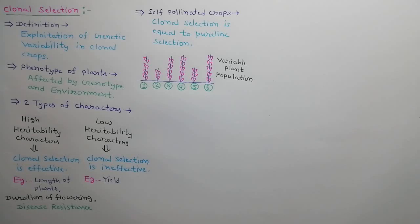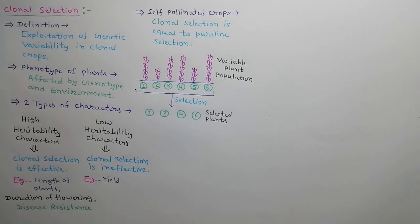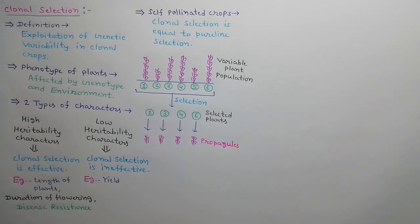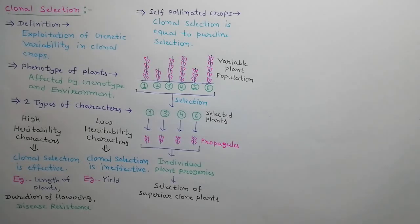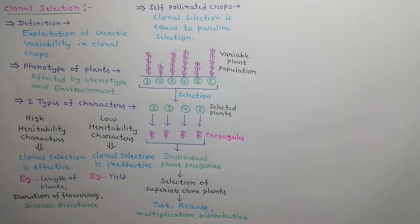Suppose we have six plants in a variable plant population. Plant number 1, 3, 4, and 6 are selected on the basis of their superiority. Now propagules are taken from selected plants and individual plant progenies are developed. Now superior clone plants are selected from these individual plant progenies. Test, release, multiplication and distribution are the further steps.